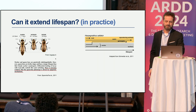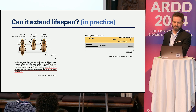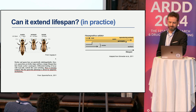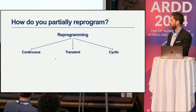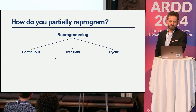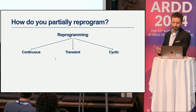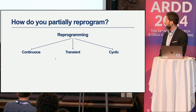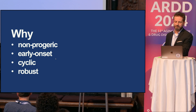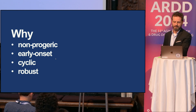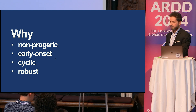In practice, there are social insects where genetically identical individuals have lifespans differing by orders of magnitude, and there is evidence this occurs via an epigenetic mechanism. Social insects are not mammals, however. Reprogramming can be done temporally in three ways: continuously, transiently as a one-off, or cyclically on and off. Key words I will keep returning to are non-progeric, early onset, cyclic, and robust—and I will explain why these matter.